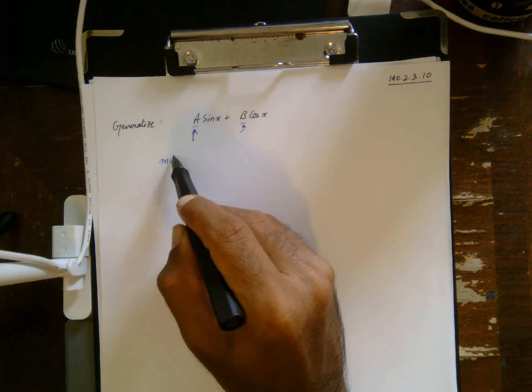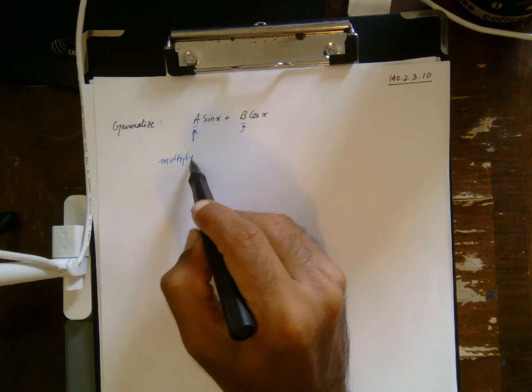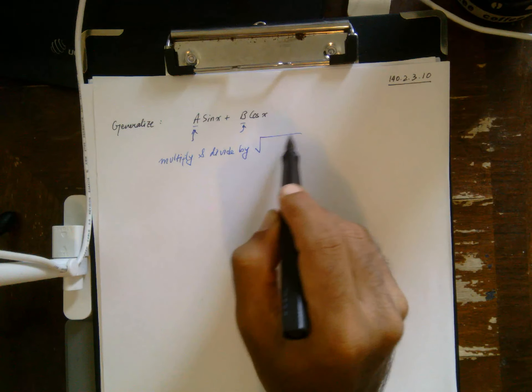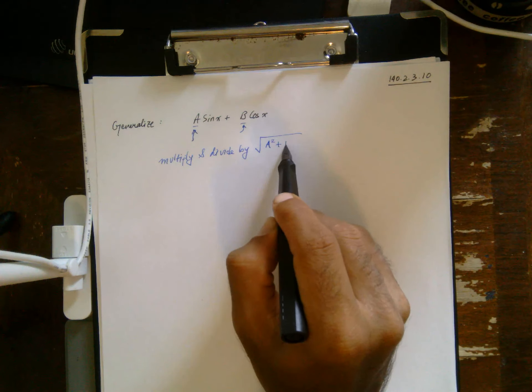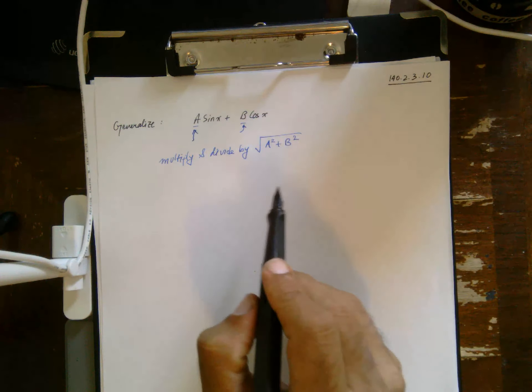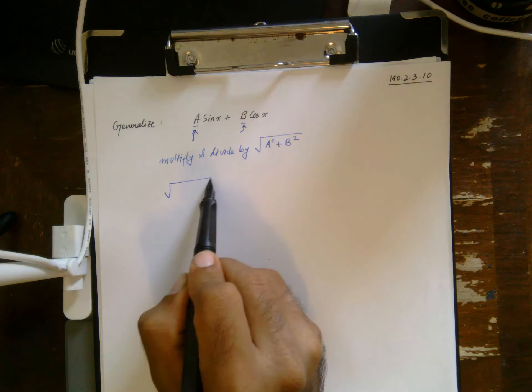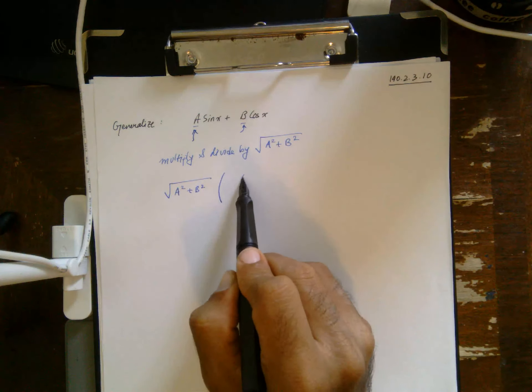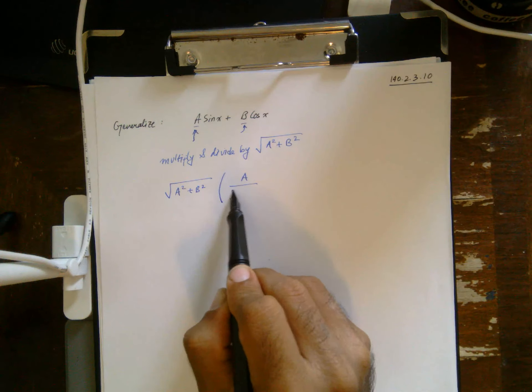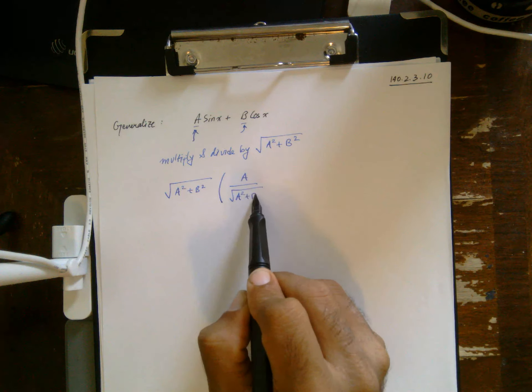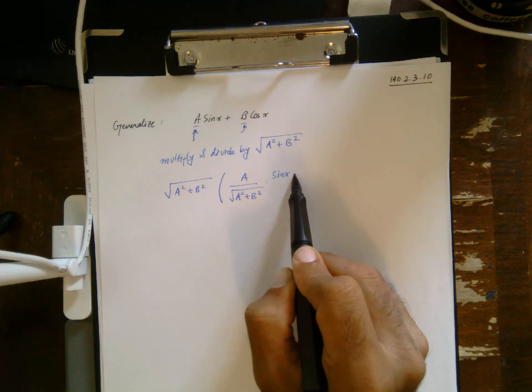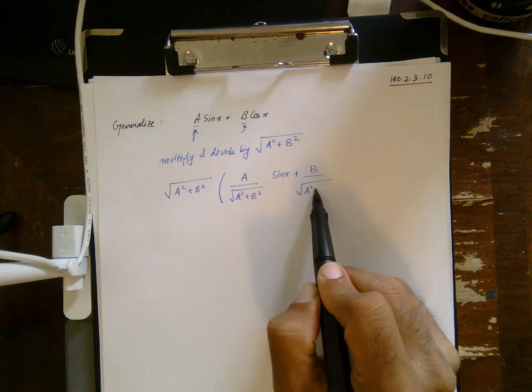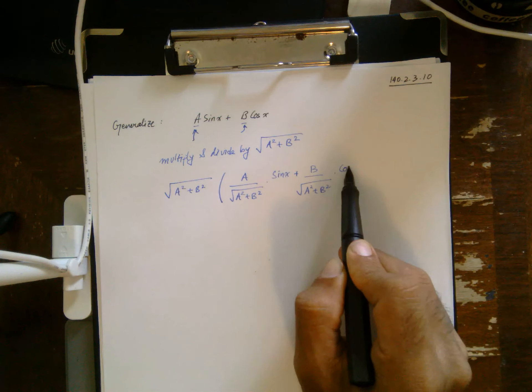My trick is going to be multiply and divide by square root of a squared plus b squared. So if I do that, that's the multiplication part: a over square root of a squared plus b squared times sine x, plus b over square root of a squared plus b squared times cosine x.